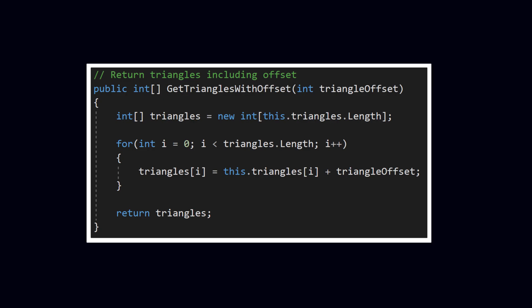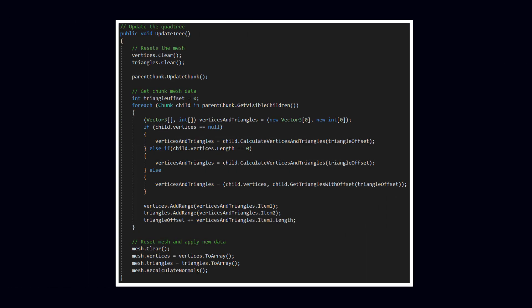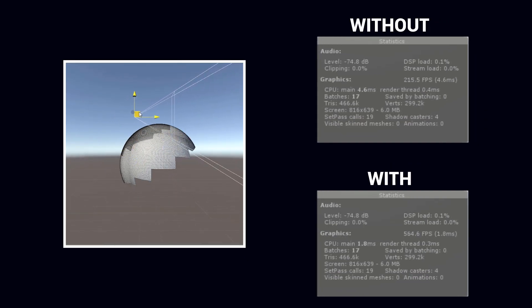Now let's go back to the loop. If the chunk does contain information about the vertices and triangles, we store the data in the vertices and triangles tuple just as we would with newly generated data. We then add vertices and triangles to their respective lists and increment the triangle offset by the amount of vertices in the chunk. Once we've looped through all the chunks, we can finally apply the vertices and triangles to the mesh. And voila — everything is working!